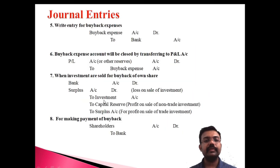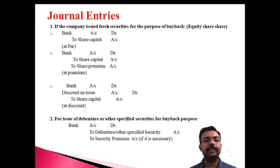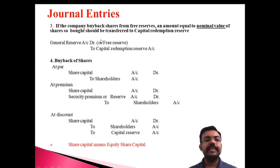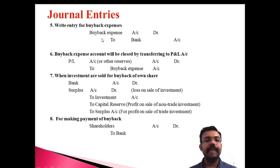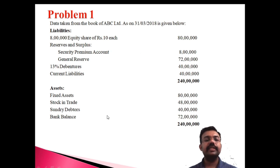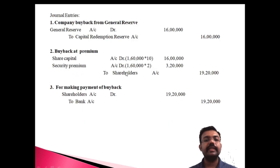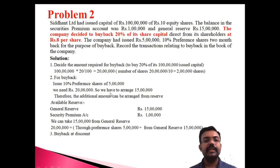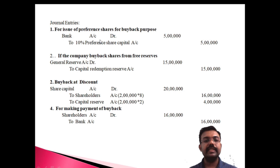To summarize: we discussed the general entries for buyback — issuing equity shares, utilizing reserves, buying back shares at par, at a premium, or at a discount, recording buyback expenses, and making payment. The first problem had a balance sheet and required preparing journal entries and a new balance sheet. The second problem involved issuing preference shares for the purpose of buyback and recording all related transactions. Thank you so much for watching.